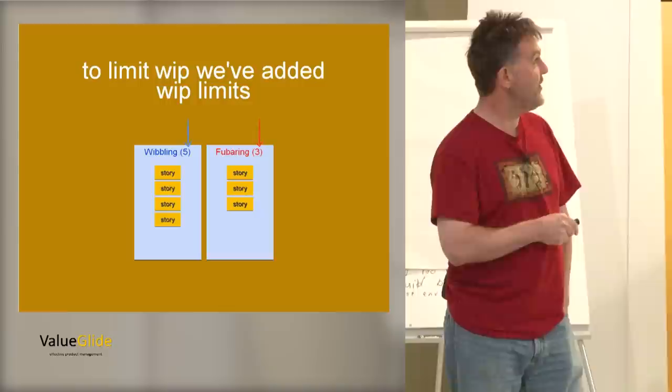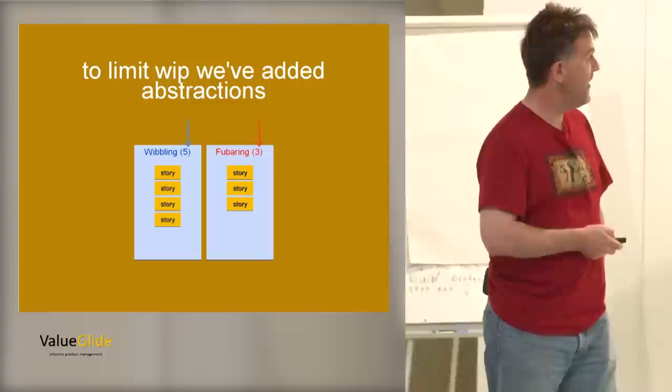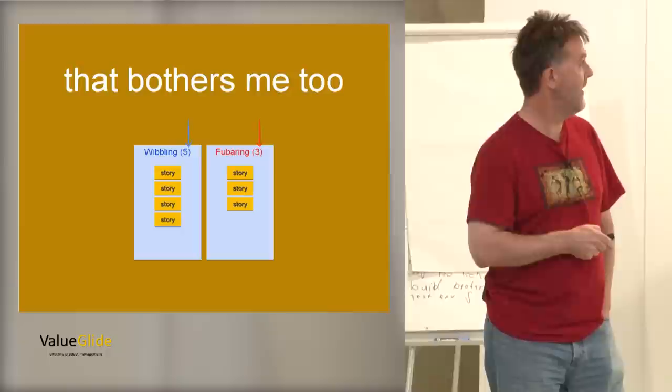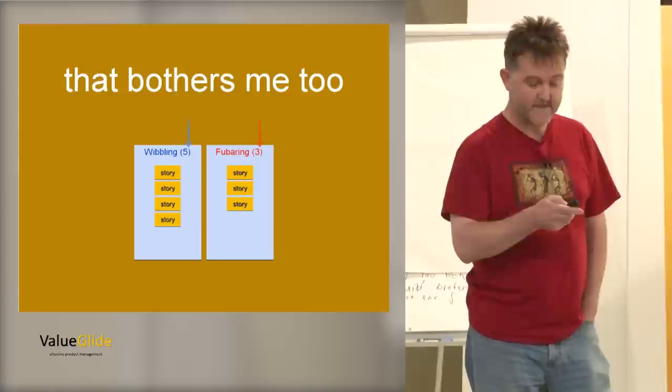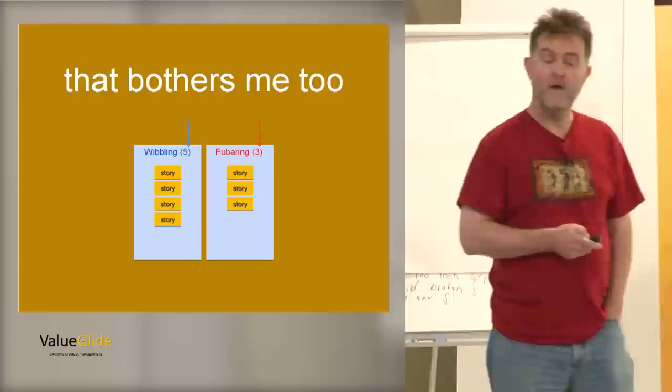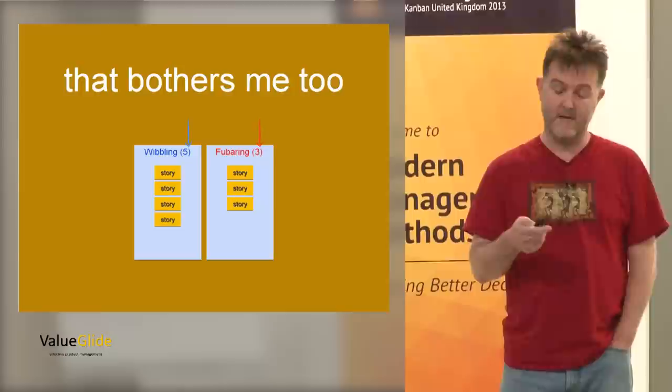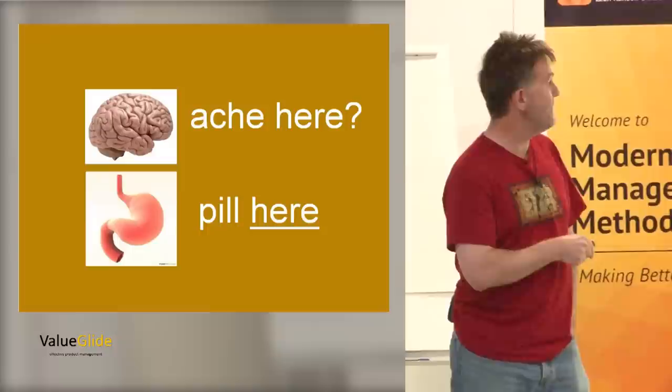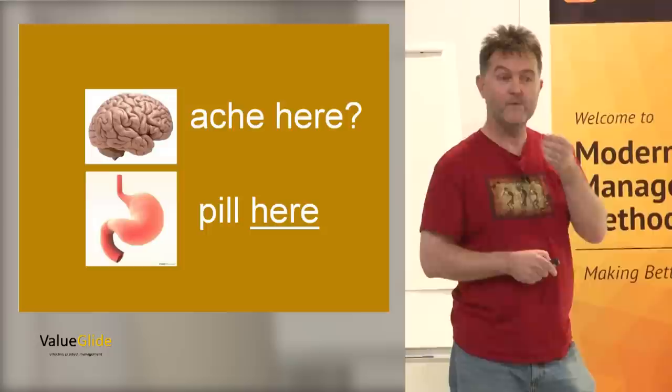Let's recap a minute. What did we do? To limit the work in progress, we added work in progress limits. Seems like a no-brainer. Well, that bothers me too. Because these are abstractions. These fives are abstractions. And that bothers me because they're not visual.